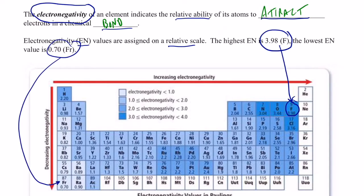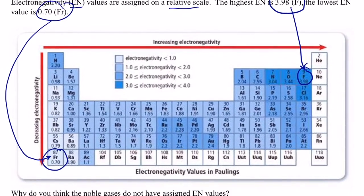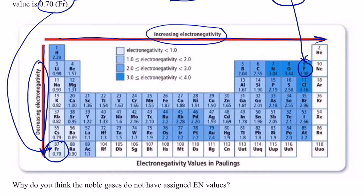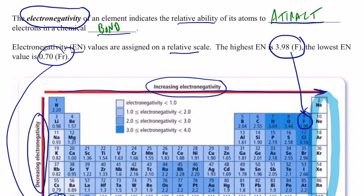The lowest electronegativity value is 0.70, assigned to the element francium. Just by looking at this chart, it should be easy to tell that when we move to the right across a period, electronegativity increases, and when we move down a group, electronegativity decreases. You'll notice that the noble gases do not have an electronegativity value.